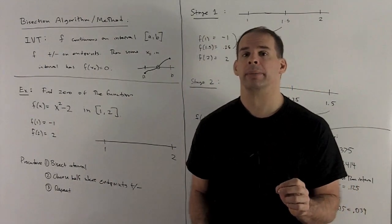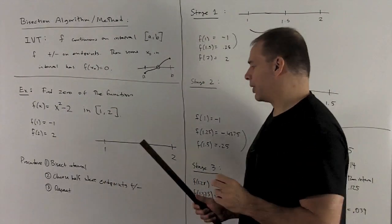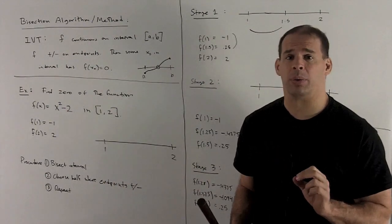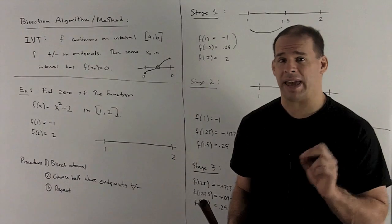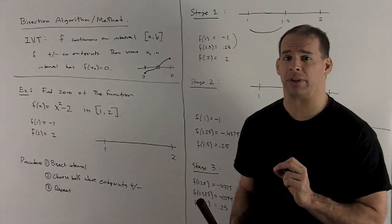If I get a positive, I want to take the half that has the negative on the other endpoint. If I get a negative, I take the half that has the positive on the other endpoint.